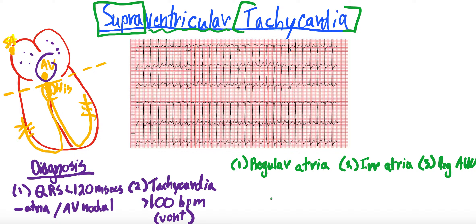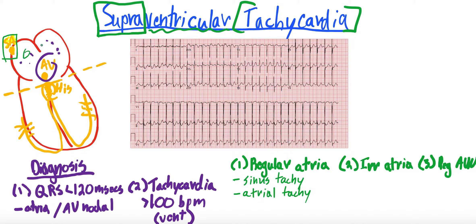What could cause a regular rate atrial tachycardia? It could be something as simple as sinus tachycardia, which is caused by a multitude of different things. It could also be atrial tachycardia. The difference: sinus tachycardia arises from the SA node, whereas atrial tachycardia arises from the atria. In addition to that, you can actually have a regular rhythm atrial tachycardia that is a flutter. Atrial flutter can be regular, can be irregular as well, or irregularly regular.